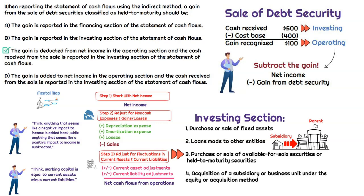The correct answer is that the gain is deducted from net income in the operating section. That is true using the indirect method. And then the cash received from the sale is reported in the investing section of the statement of cash flows. So that's going to be the correct answer here.